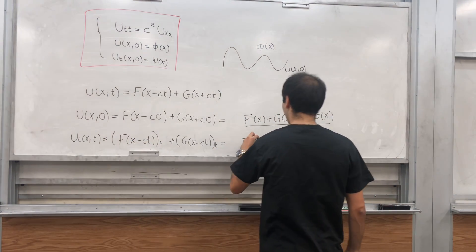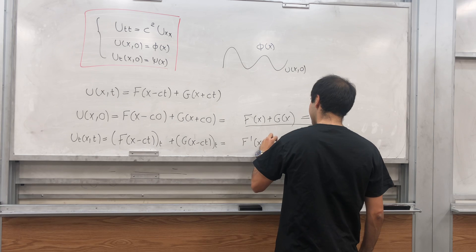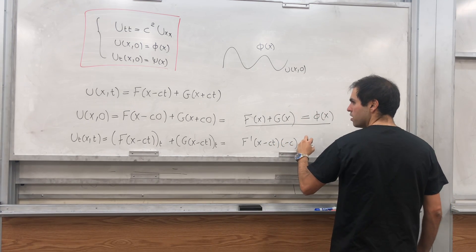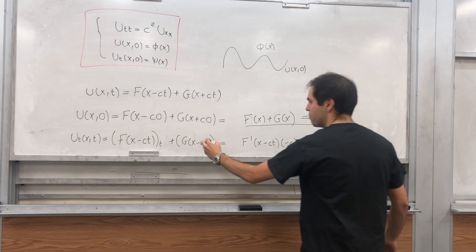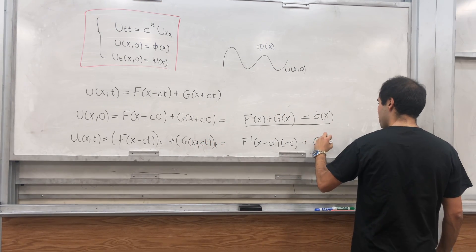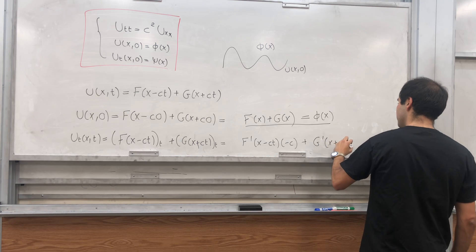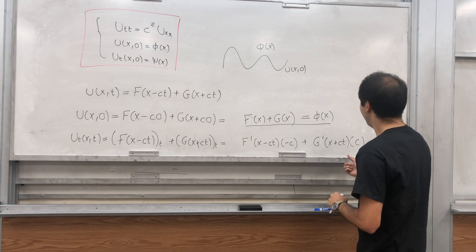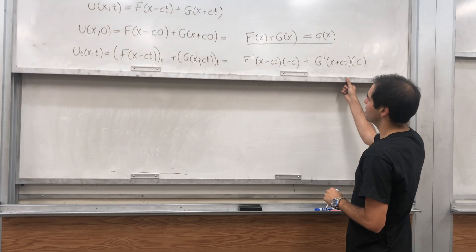Which becomes F, again use the chain rule, F prime of x minus ct times minus c, plus G prime of x plus ct times c.